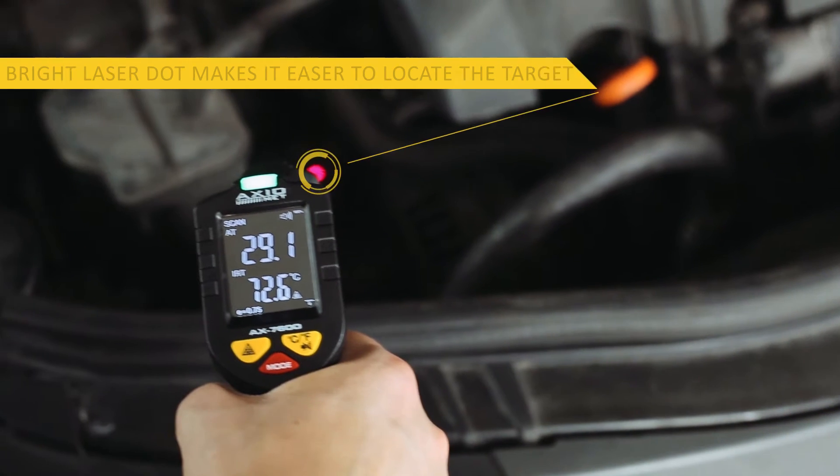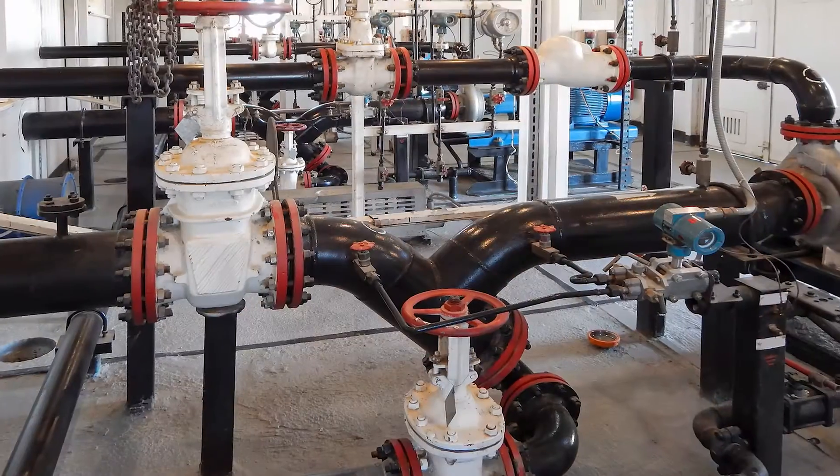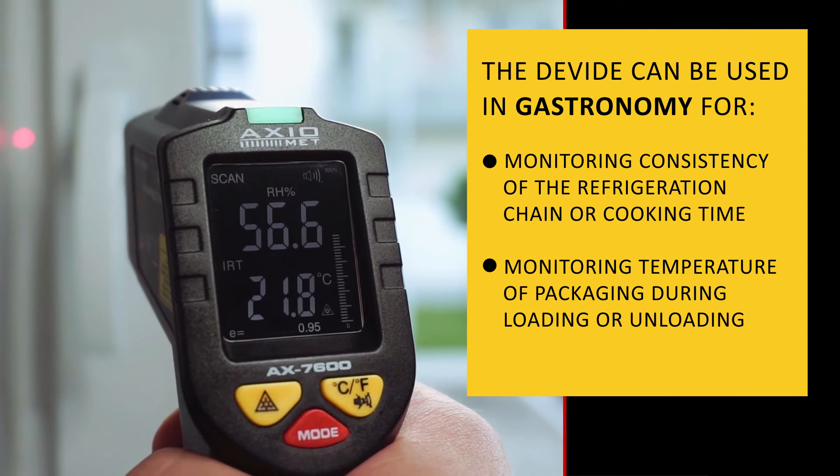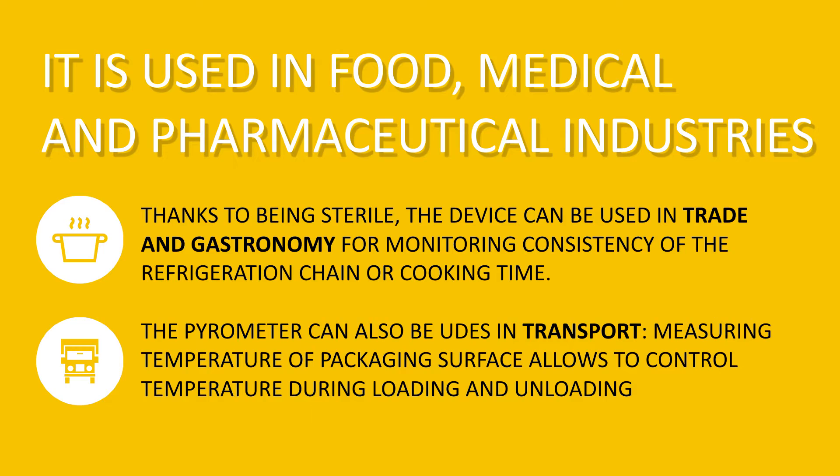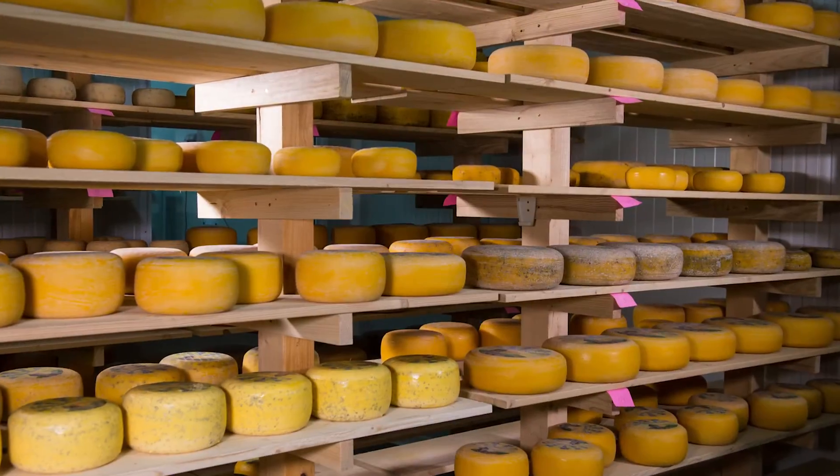It's used to diagnose movable objects in hard-to-reach places or objects of high temperature because it's possible to measure both relative humidity and temperature with a single device. This pyrometer can also measure dew point and monitor the risk of mold formation.